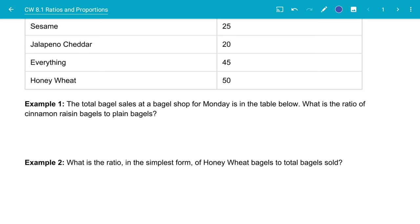In this example, they want to know what is the ratio in simplest form of honey wheat bagels to total bagels sold. So remember, the order matters. So we're going to do honey wheat bagels to total bagels.